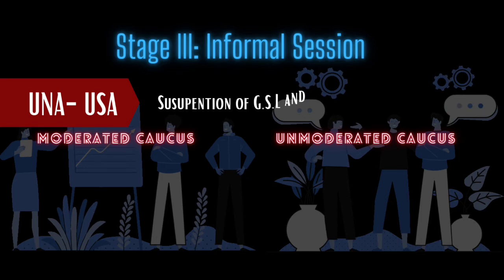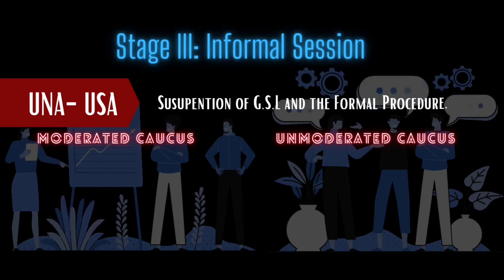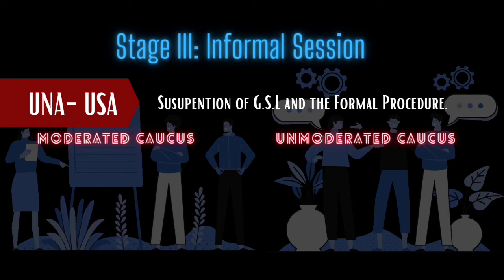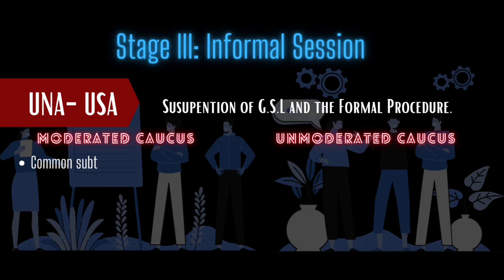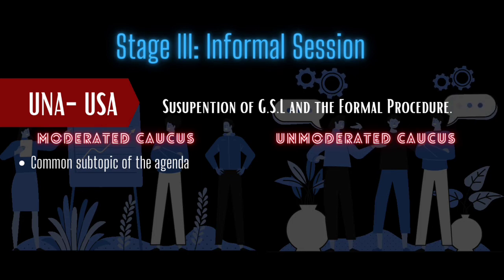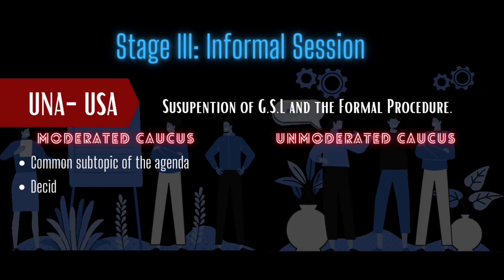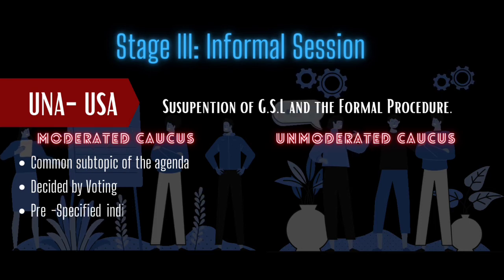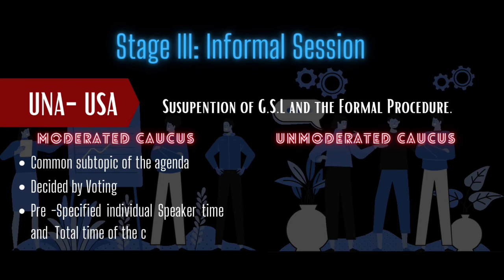While a GSL cannot be exhausted, it can be suspended when moving into informal sessions. These informal sessions are divided into two: Moderated Caucuses and Unmoderated Caucuses. Under a Moderated Caucus, delegates select and vote upon a subtopic of the main agenda, discussed for a specified total and individual speaker's time. No points of information are accepted, and any time left after a speech goes directly to the floor. The delegate proposing the topic gets to speak first or reserve their right to speak later.